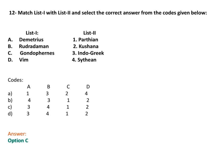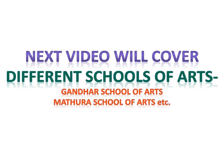Now the next question is matching list 1 with list 2. Option C is the correct answer: Demetrius was an Indo-Greek king; Rudra Dhaman was Scythian (Saka); Gondophares was Parthian; and Vima Kadphises was Kushan.